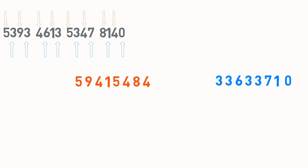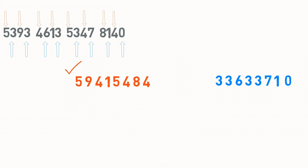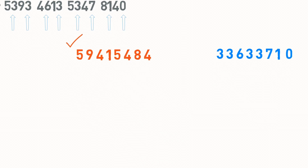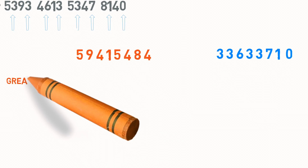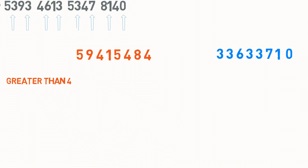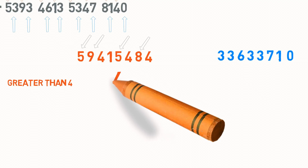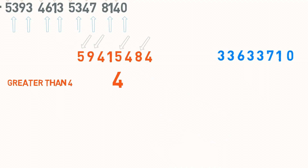Now I will do two things with the odd-positioned digits. First, I will count how many of its digits are greater than 4. So our answer is 4. Let me write this down.